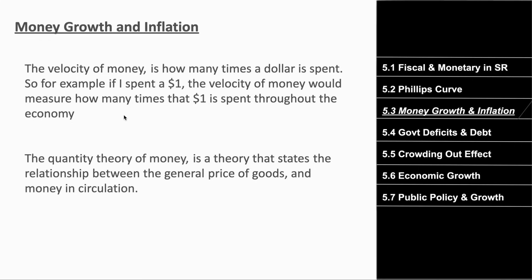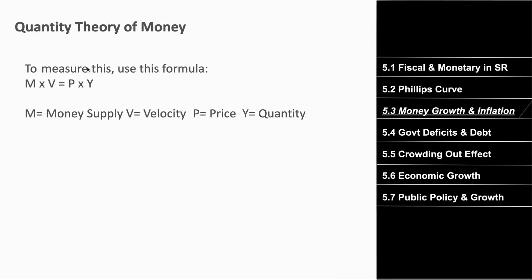If I spent one dollar, the velocity of money would measure how many times that dollar is spent throughout the economy. When I spend a dollar at Walmart, the Walmart manager takes the profit and spends at another store, and so on — the economy is entirely circular. The quantity theory of money is a theory that states the relationship between the general price of goods and the money in circulation. The formula is: money supply times velocity equals price times quantity, or MV = PQ. You may get questions giving you three variables and asking you to solve for the fourth.